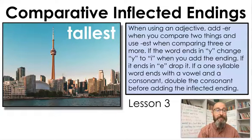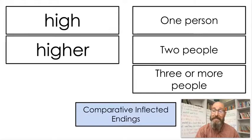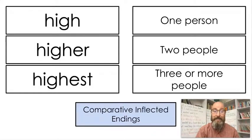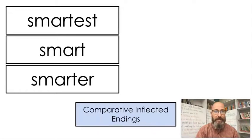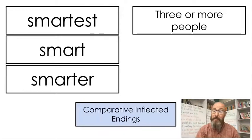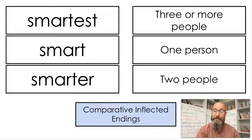We're going to practice three different ways today. First, let's do the word 'high.' If I'm comparing two people I add '-er,' so 'high' becomes 'higher.' If I'm comparing three or more, I add '-est,' so 'high' becomes 'highest.' Now look — 'smart,' 'smarter,' 'smartest.' When do I use 'smartest'? When comparing three or more. What if it's just one person? 'He is so smart.' And 'smarter' is for two people.